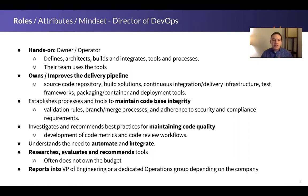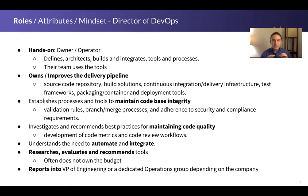This person, in particular, owns and improves the delivery pipeline. The director of DevOps is going to care about their source code repository, their build solutions, continuous integration, continuous delivery. They're going to care about infrastructure, testing, packaging, and container and deployment tools. That software delivery pipeline is what the DevOps director cares about and manages.